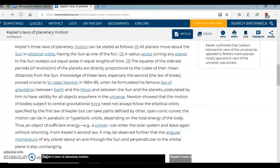Knowledge of these laws especially the second the law of areas proved crucial to Sir Isaac Newton in 1684-85 when he formulated his famous law of gravitation between earth and the moon and between the Sun and the planets postulated by him to have validity for all objects.